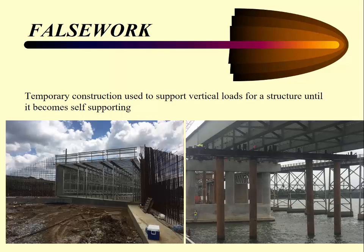Falsework is the temporary construction used to support vertical loads for a structure until it becomes self-supporting. The picture on the left shows the falsework towers used to support the top slab to be built for this wagon barrel box culvert. To the right, you see falsework being used to support the beams for one of the lake bridges, utilized to help jack and support the beams during placement.